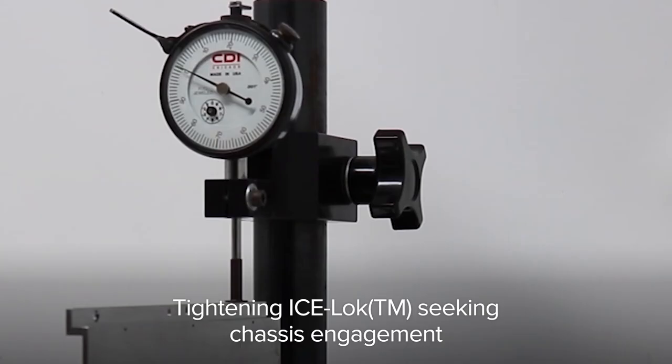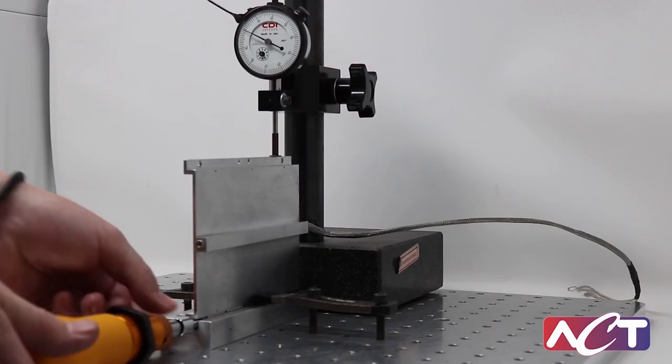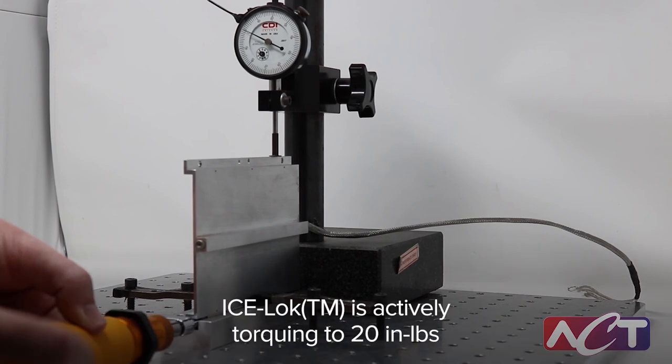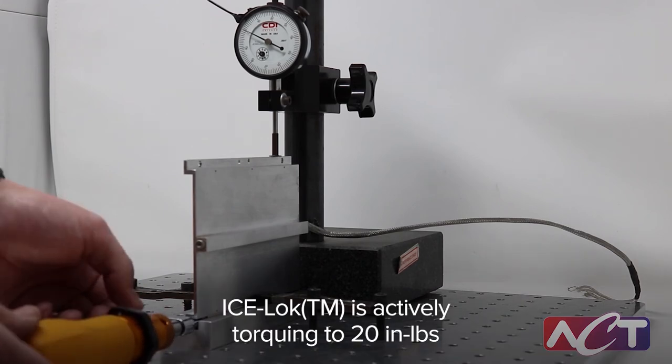As you can see, we have the dial indicator zeroed and the ice lock is in position and ready to be torqued. As we tighten the ice lock, you can see there's no displacement of the card.